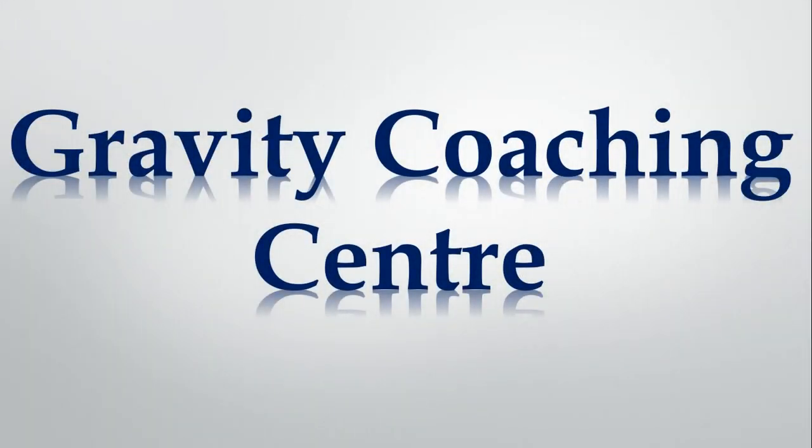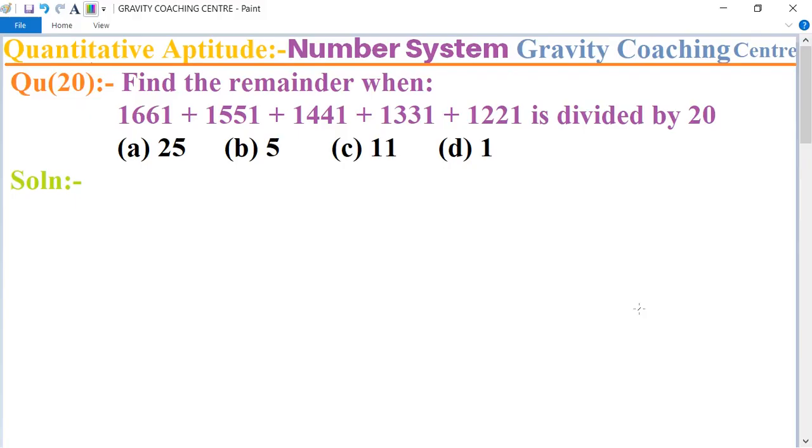Welcome to our Channel Gravity Coaching Center, quantitative aptitude chapter number system. Question number 20: Find the remainder when this sum is divided by 20. So we take three numbers: 25, 10, and 15, and this number is divided by 7.